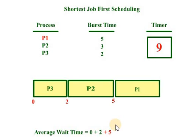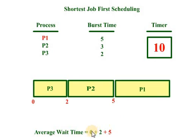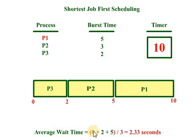The waiting time of P3 is 0, the waiting time of P2 is 2, and the waiting time of P1 is 5. So the average waiting time is 2.33 seconds.